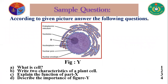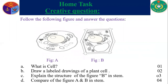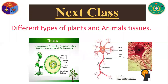Now, see this sample question — we will follow this type of question as an example, so try to solve it. Next, homework: you can see a diagram in the slide. Follow the figure and answer the following questions. Our next class topic will be: different types of plant and animal tissue.